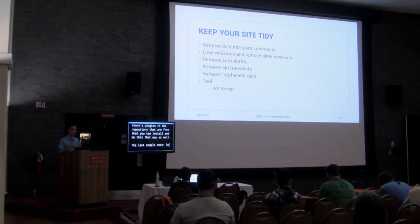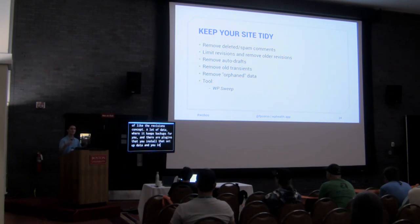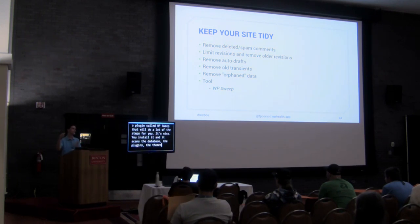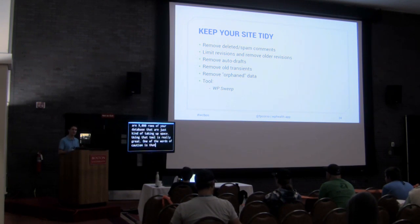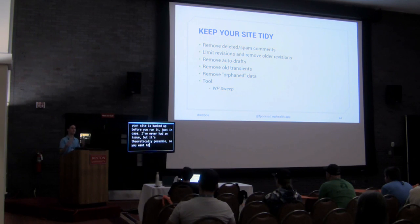Also remove auto-drafts and old transients. Plugins you install set up data, and when you uninstall them they won't remove their data. All this kind of stuff builds up over time. Luckily there's a plugin called WP Suite that will do a lot of this for you — it scans your database, plugins, and themes and tells you which rows are just taking up space. One word of caution: it could theoretically accidentally delete something you need. So make sure your site is backed up before you run it, and then delete the plugin afterwards since you don't want to keep active a plugin you're not using.